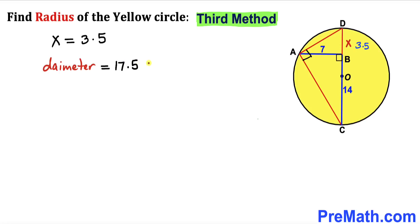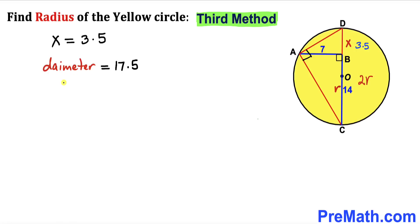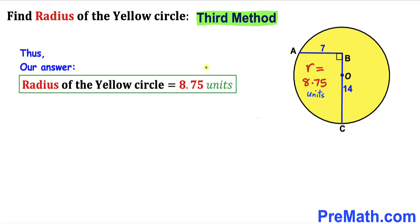Since BD is 3.5 and BC is 14, the full diameter CD is 14 + 3.5 = 17.5 units. With radius OC = OD = r, the diameter is 2r = 17.5. Dividing by 2, our radius r = 8.75 units. The radius of this yellow circle turns out to be 8.75 units using the third method.